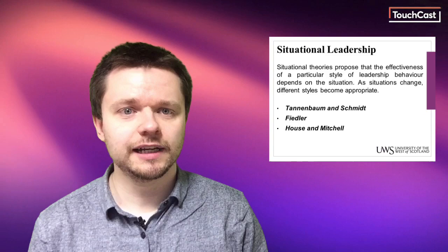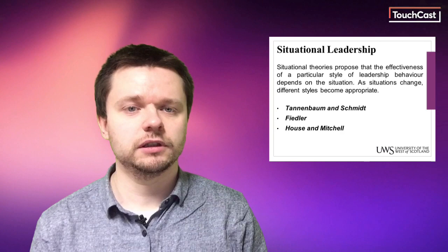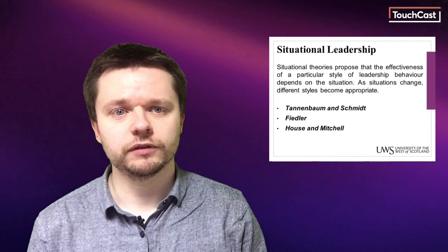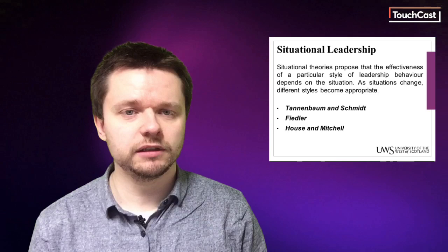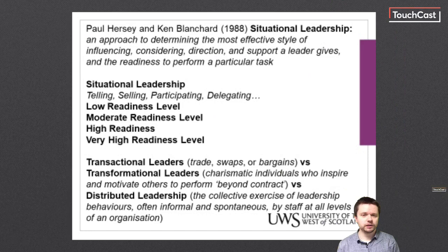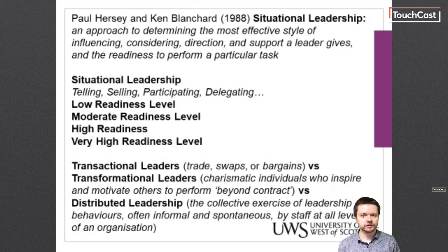The work of Blake and Mouton and others led to the idea that one style of leadership for all situations might not in fact be the most appropriate approach — each situation demands a different style. This led to the development of the contingency models of leadership. The best known contingency models are those of Tannenbaum and Schmidt, Fiedler, and House and Mitchell. These models are quite complex and beyond the scope of this session. Suffice to say that each model uses a different set of variables or contingencies to determine what style of leadership is most appropriate for a given situation.